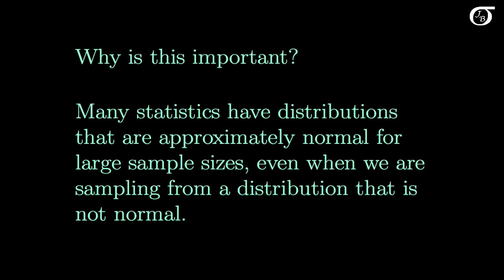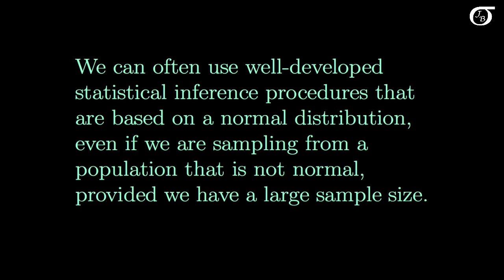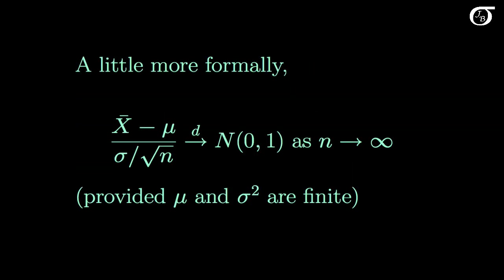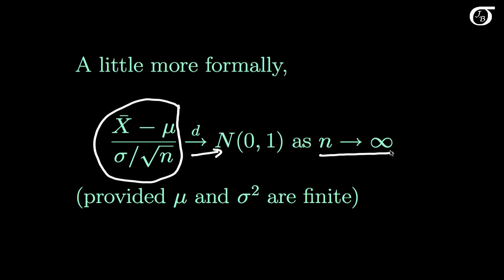Why is this important? The central limit theorem tells us that many statistics have distributions that are approximately normal for large sample sizes, even when sampling from a non-normal distribution. This means we can often use well-developed statistical inference procedures and probability calculations based on the normal distribution, even if we're sampling from a non-normal population, provided we have a large sample size. More formally, the usual z-score involving the sample mean tends in distribution to the standard normal distribution as the sample size tends to infinity, provided the mean and variance are finite.